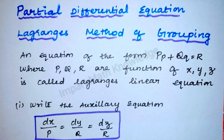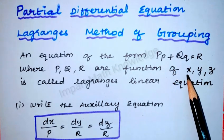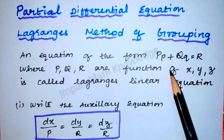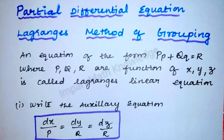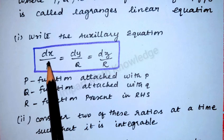Welcome back to my channel. This video is about Lagrange's method. Lagrange's linear equation is of the form Pp + Qq = R, where P, Q, R are functions of x, y, and z. For these kinds of equations, first we write the auxiliary equation.